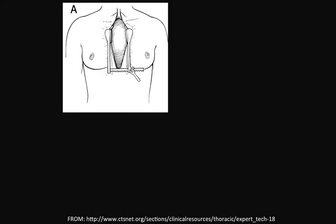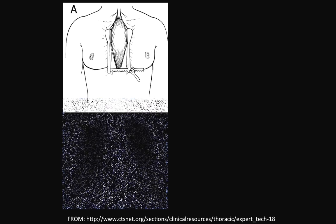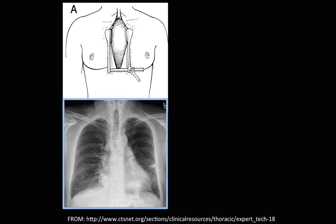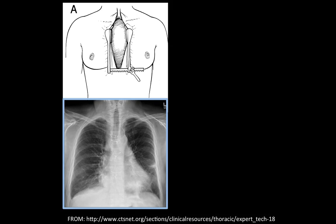This is the way a usual sternotomy is performed — a vertical incision through the skin and a vertical opening through the sternum. This is what's used classically in CABG cases. As you can see in the chest radiograph, the sternal wires are arranged in a horizontal fashion.